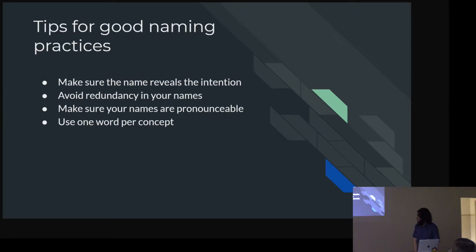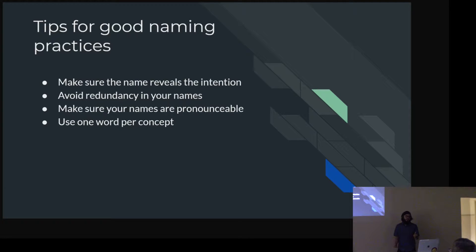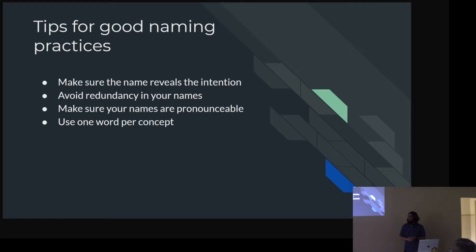To recap the naming portion: make sure the name reveals the intention in your code. Avoid redundancy — use 'user' instead of 'newUser.' Names that are pronounceable definitely help, especially when you can speak them as common English. And using one word per concept is a very good practice — that way you don't end up with both 'fetch' and 'grab' for the same thing.